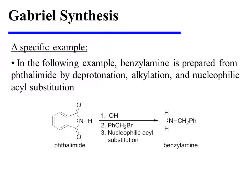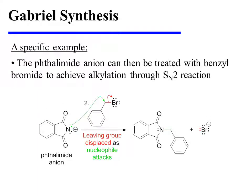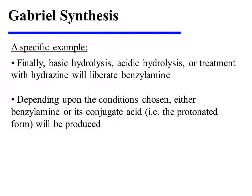In the following specific example, benzyl amine is prepared from thalamid by deprotonation, alkylation, and nucleophilic acyl substitution. The deprotonation of thalamid proceeds smoothly when hydroxide is used, giving the thalamid anion. The thalamid anion can then be treated with benzyl bromide to achieve alkylation through SN2 reaction. Finally, basic hydrolysis, acidic hydrolysis, or treatment with hydrazine will liberate benzyl amine.